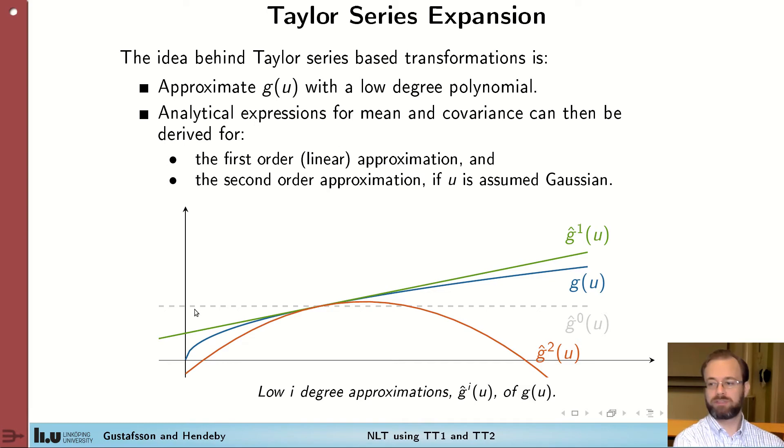If you approximate g with a constant, this is a fairly bad approximation. Whereas if we approximate it with a linear function or a quadratic function, we get better and better fit, especially for the area around this point of the approximation.